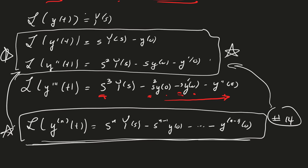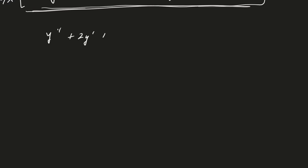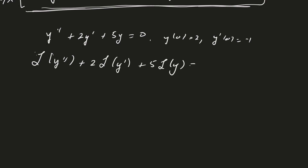Why are we looking at the Laplace transform of the derivatives? The idea is the following: suppose I give you y double prime plus 2y prime plus 5y equals 0, with initial conditions y(0) equals 2 and y prime(0) equals minus 1. We already know how to solve this, but we're going to develop a new technique — taking the Laplace transform of both sides of the equation.